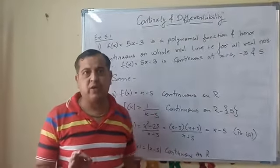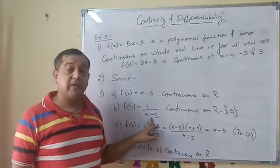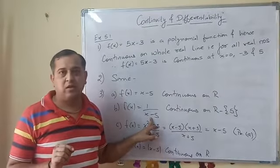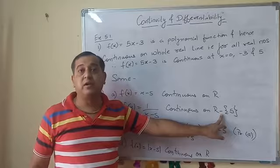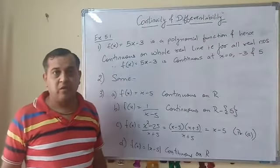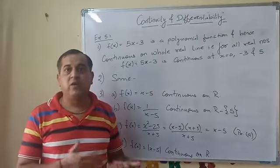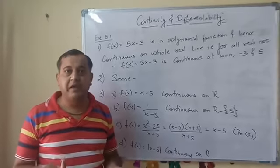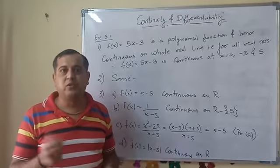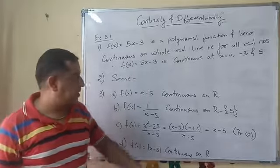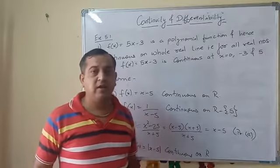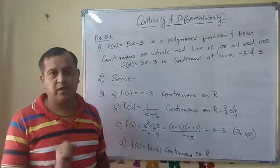Now if here is x - a, then it's R minus set containing single element a. If we have 1/(x + 8), then zero will be at x = -8. So here is R minus set containing single element -8.